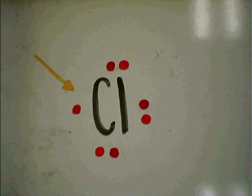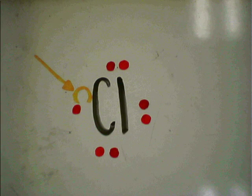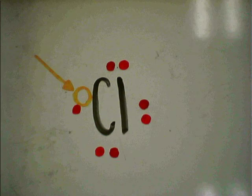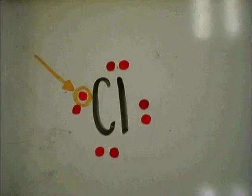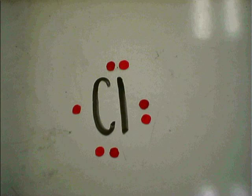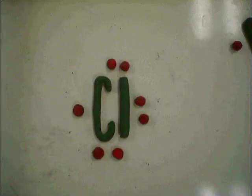The dot diagram for chlorine will look like this. Notice how it's missing one electron to be perfectly filled. Because of this, chlorine isn't as stable as it could be. To be stable and happy, chlorine wants to fill this slot.